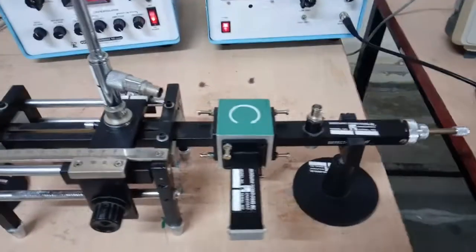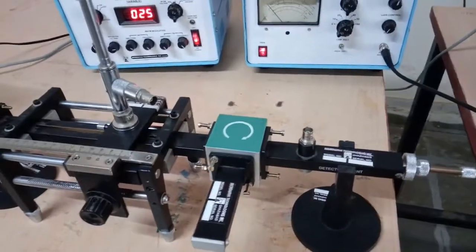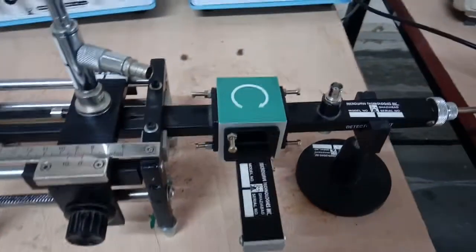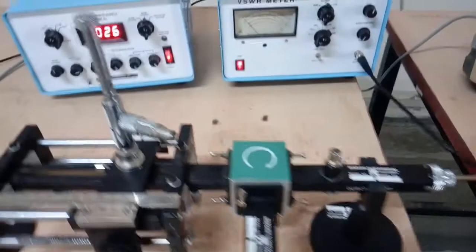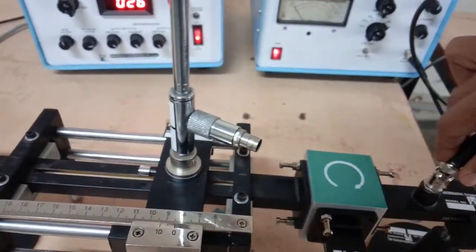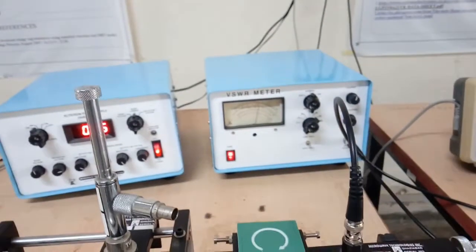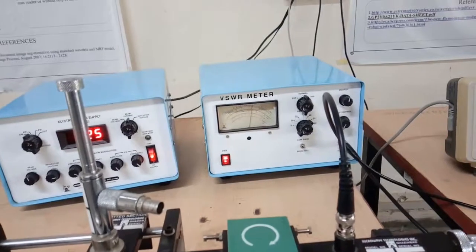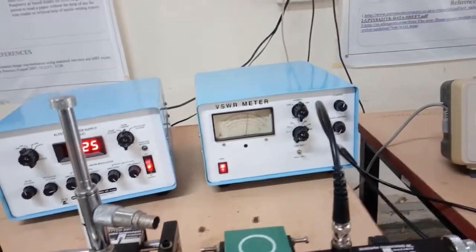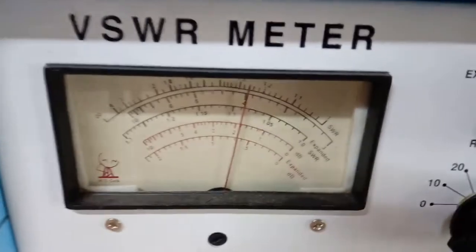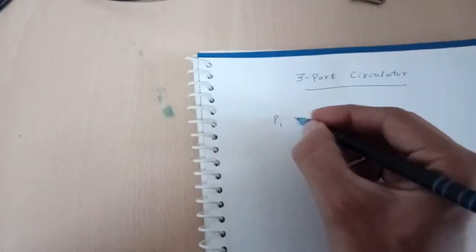Now we can see the frequency. I have connected the circulator with port 1 as input port, port 2 as the output port, and port 3 is connected with the match termination. I am connecting the BNC cable. Check the level, output level. You can see it displays 41.8. We have set the dB switch at 40 dB and the current reading shows us 1.8 dB level. Red scale we have to check.